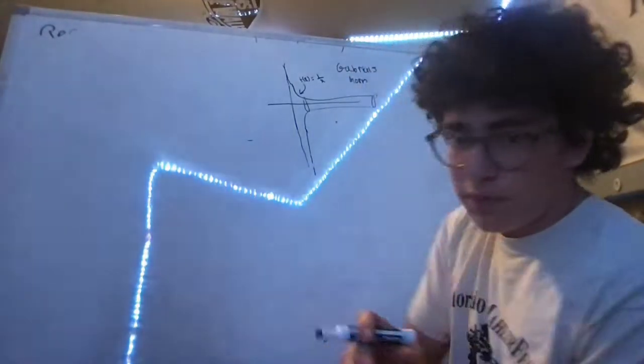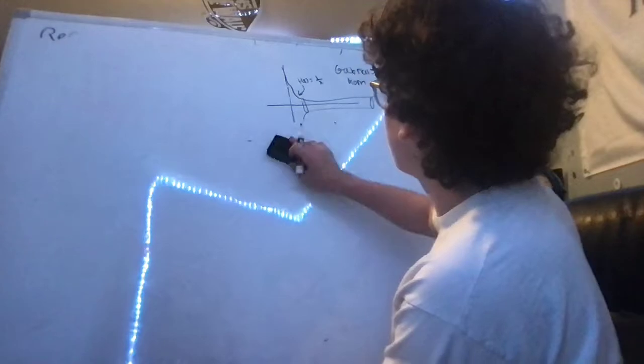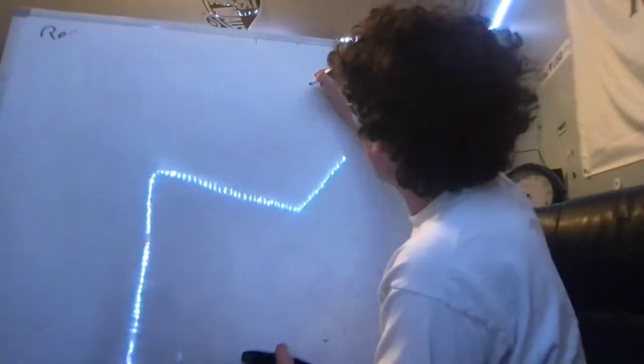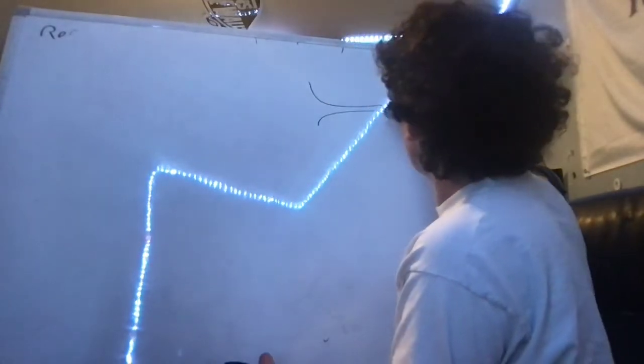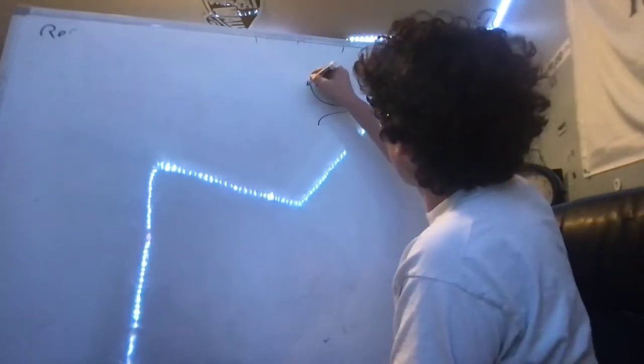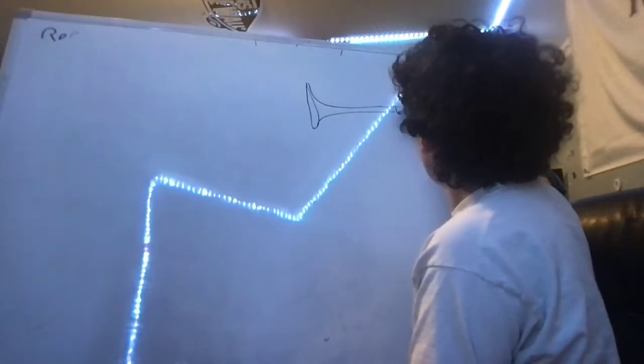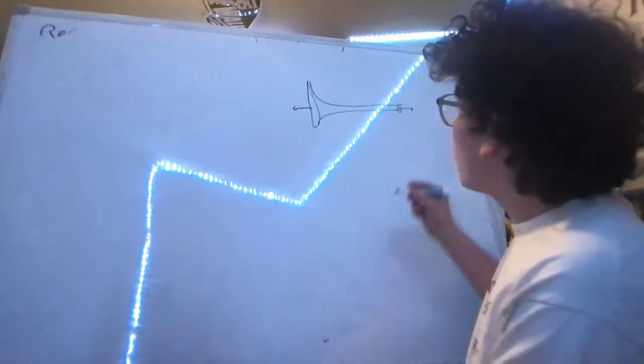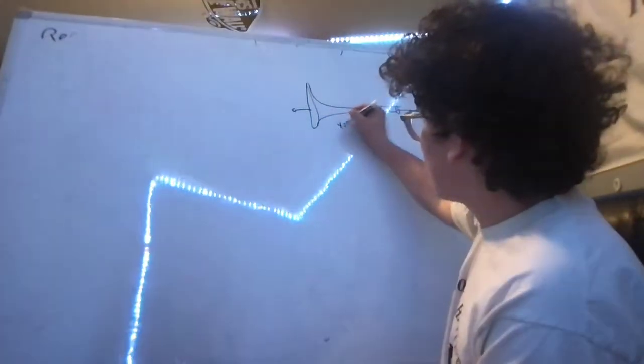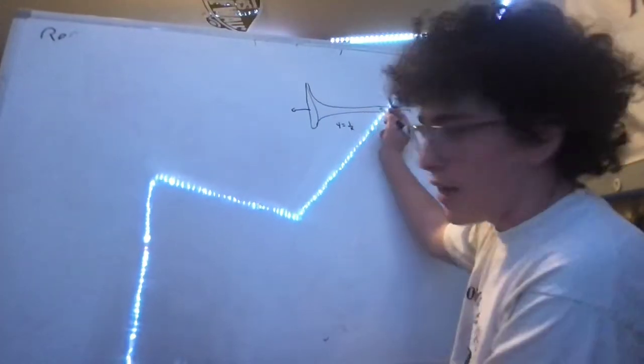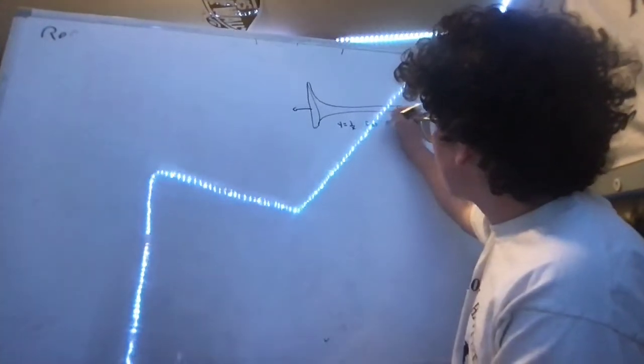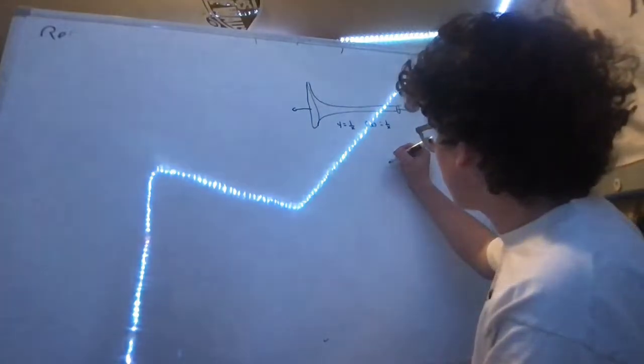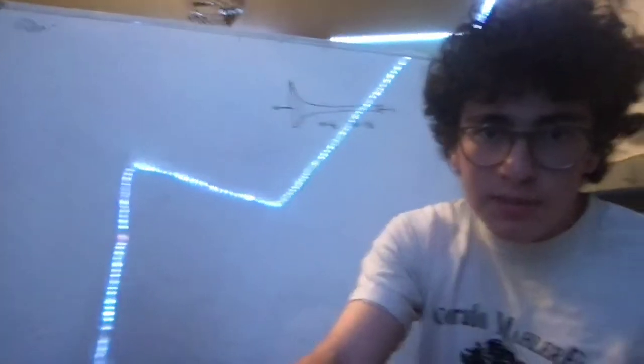We can prove that here. I'm going to just erase part of our depiction and redraw it a little bit. Here's our little horn, you can imagine the x-axis going through here. We know that our function we use to create Gabriel's horn is y equals 1 over x, or f of x equals 1 over x. This passes the vertical line test.